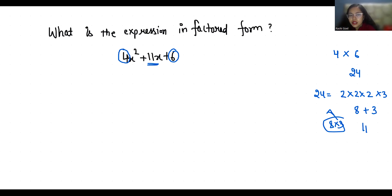When you multiply these numbers and when you add them you get the same. So when we multiply 8 times 3 we get 24, the multiplication of 4 and 6, and when we add 8 plus 3 we get the middle term coefficient that is 11. So 4x square plus 11x plus 6.